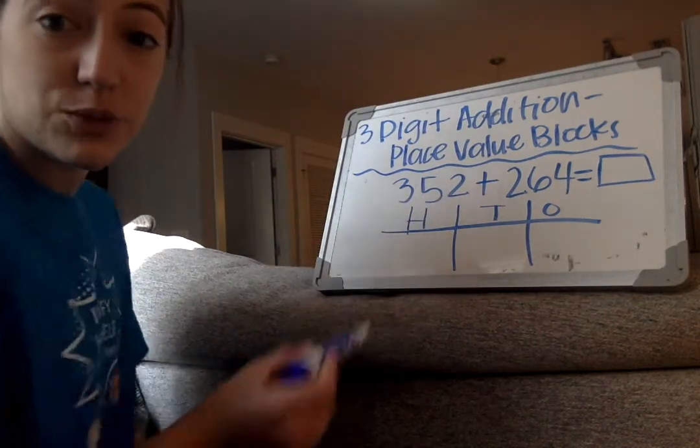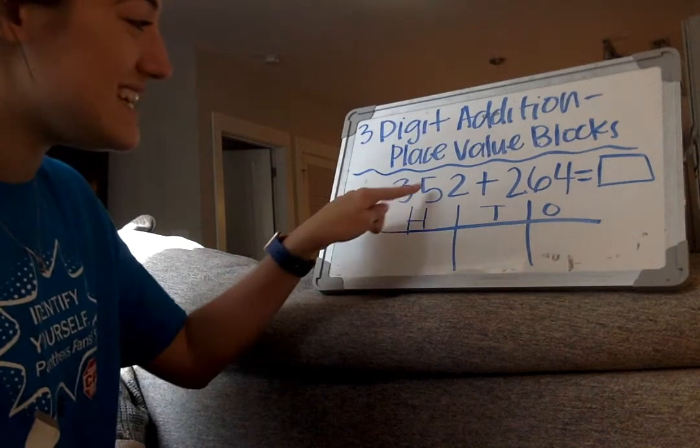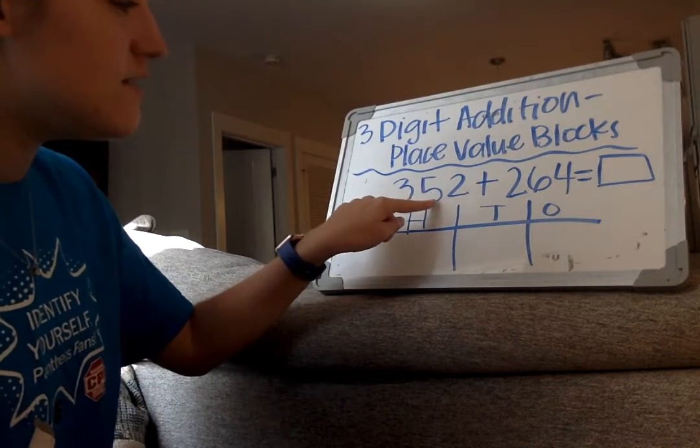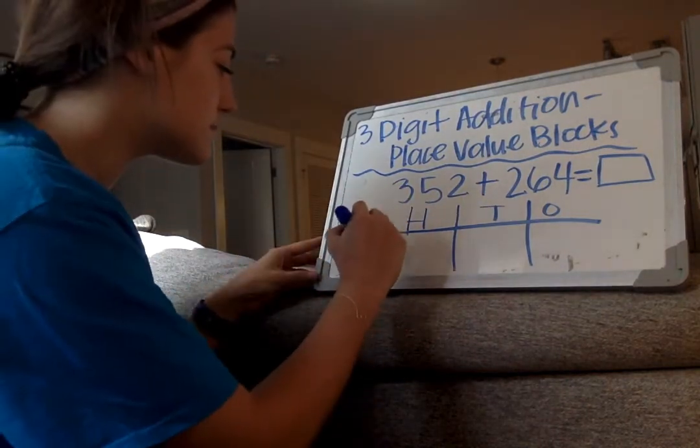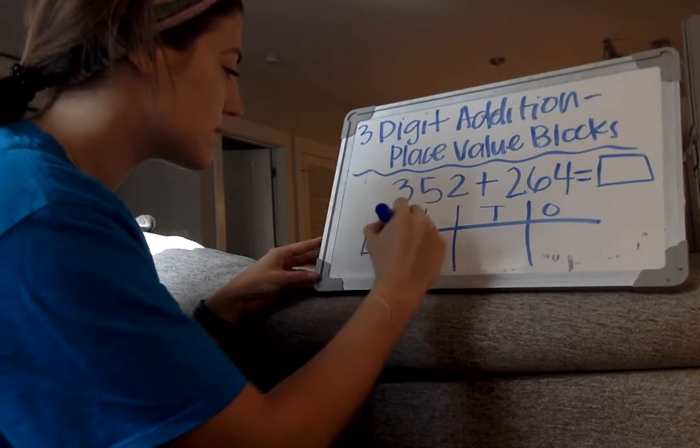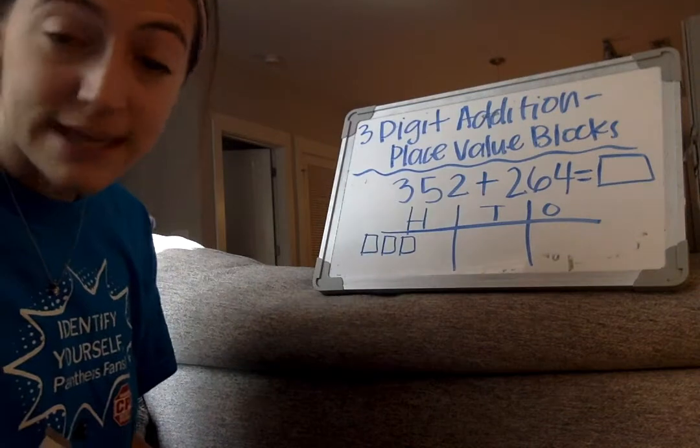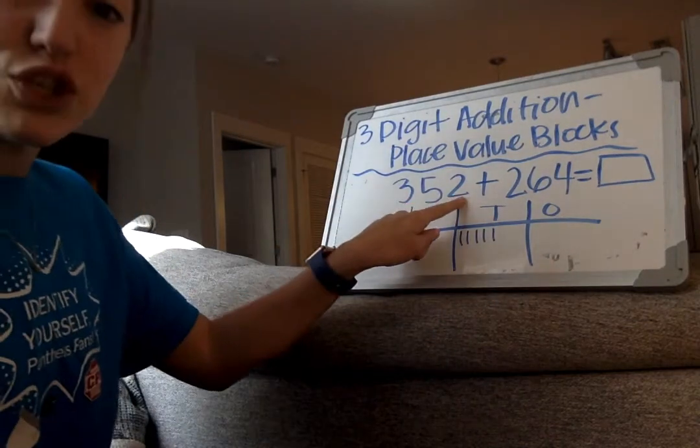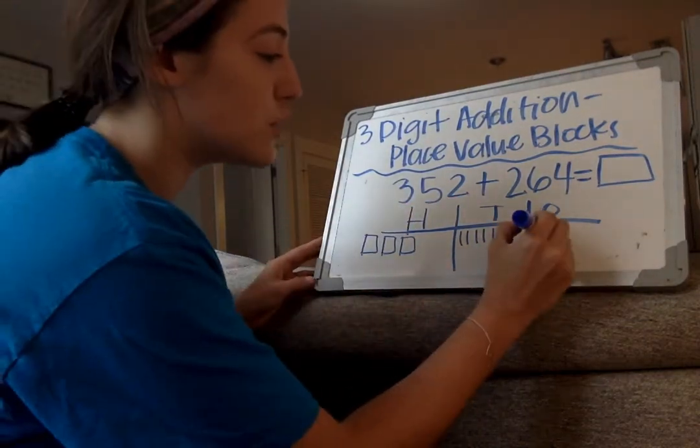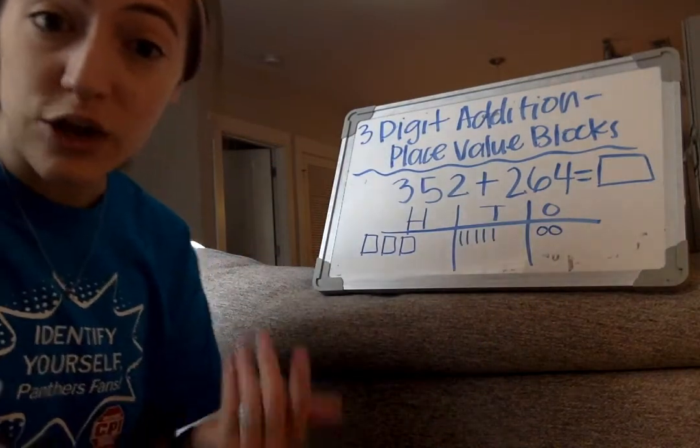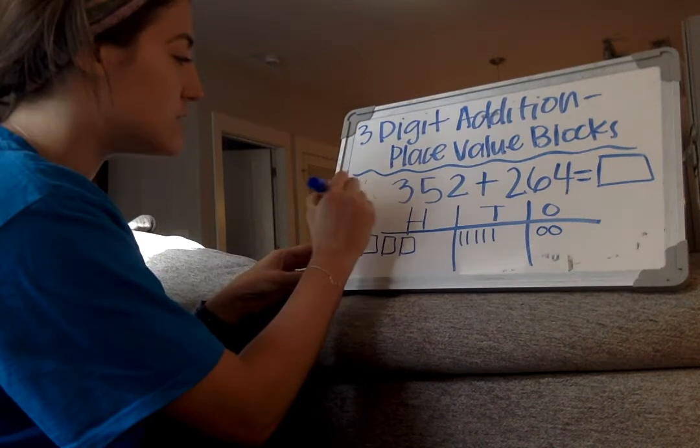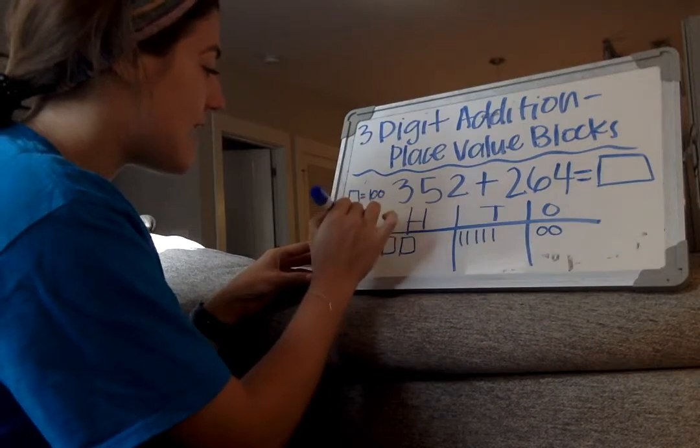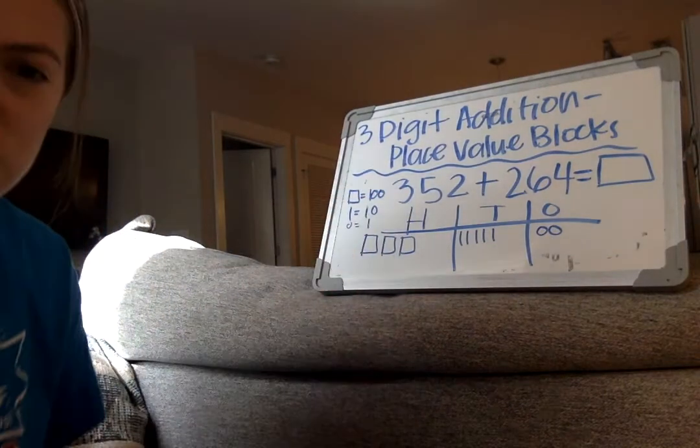Then we start at our number. We see 352. We are going to represent each part of the number in place value blocks. So we have 352, so we know that's three hundreds. We see a five in the tens place, which we know means that's 50, so we draw five tens. And we see a two in the ones place, which we know is worth two, so we draw two ones. When you're drawing your place value blocks, you remember that a square equals a hundred, a line or a ten stick equals a ten, and a dot equals a one.